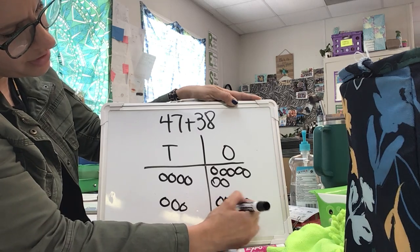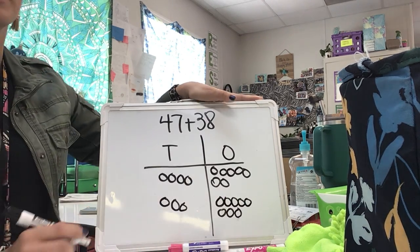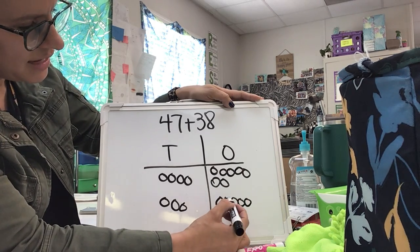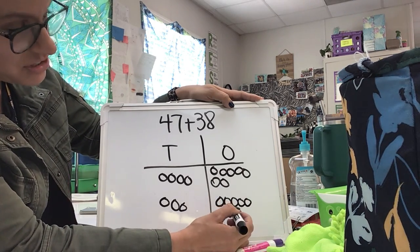I draw 1, 2, 3, 4, 5, 6, 7, 8 ones. My next step is to count how many ones I have. 5, 6, 7, 8, 9, 10, 11, 12, 13, 14, 15.